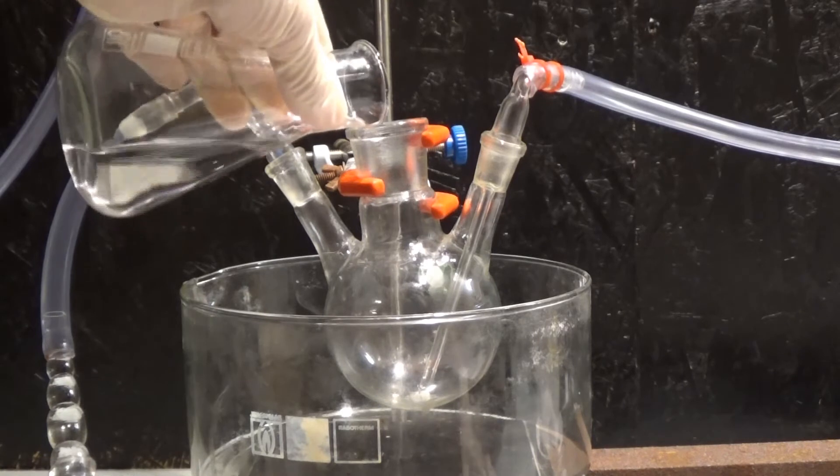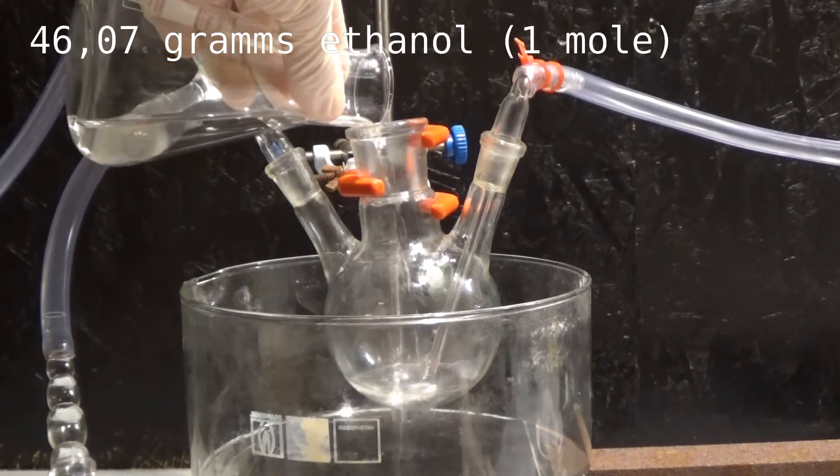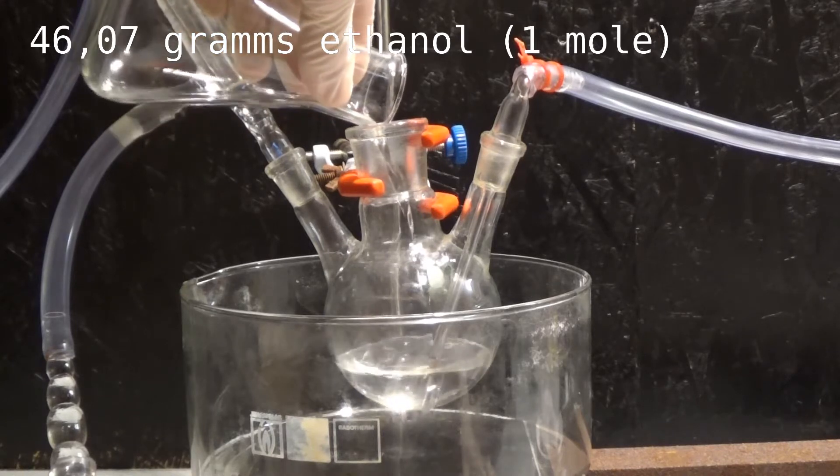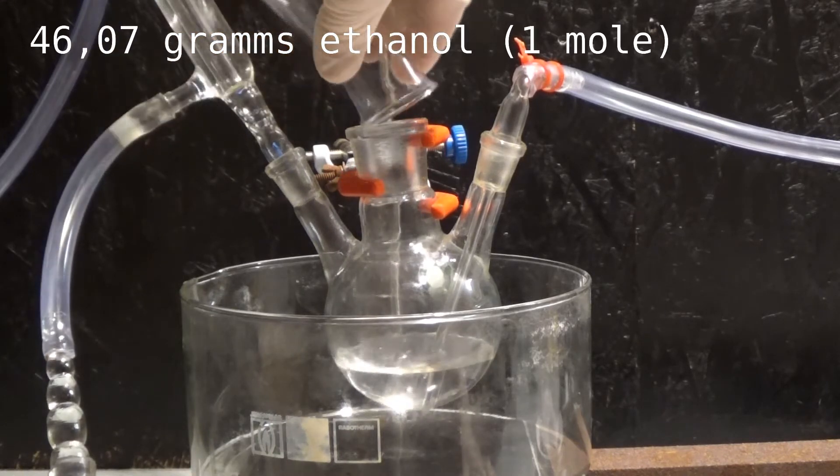Now 46.07 grams pre-dried ethanol is added into the reaction flask. This amount of ethanol corresponds to exactly 1 mol.